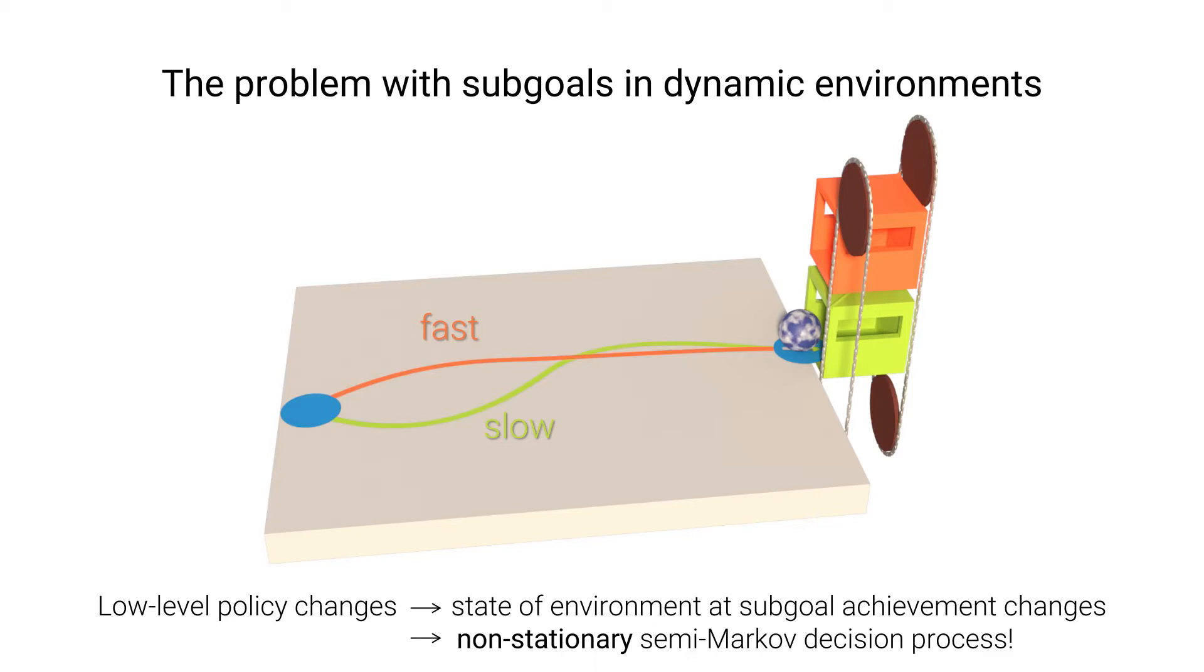From the perspective of the higher level, choosing one and the same subgoal consequently has different effects at different stages of the training. The high-level policy therefore effectively interacts with a non-stationary environment, where the non-stationarity is induced by updates to the low-level policy.